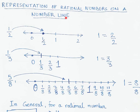Let's start with one-half and represent this number 1/2 on a number line. Between the points zero and one, we divide this distance into two equal parts. Since 1/2 means one part out of two parts, this midpoint shown here represents one part out of the two parts into which one has been divided.